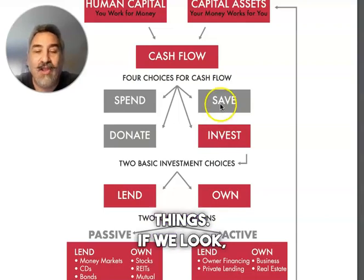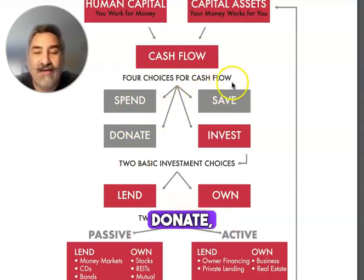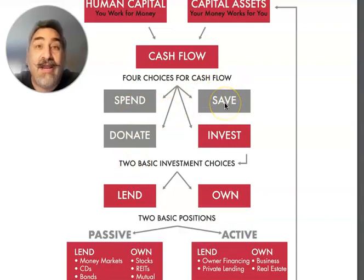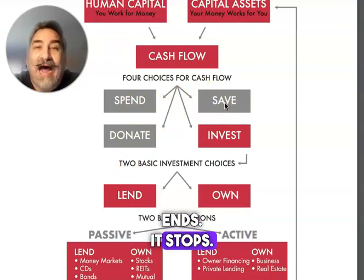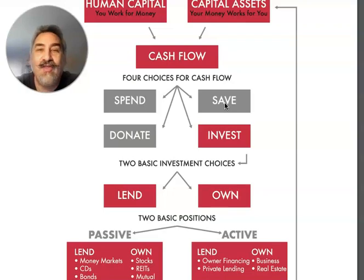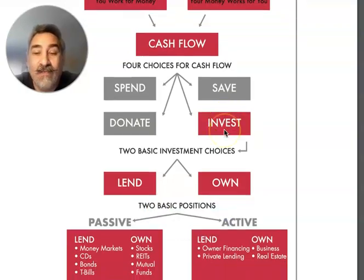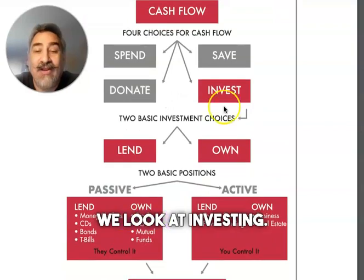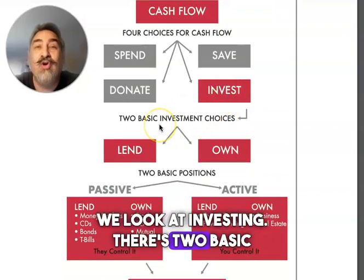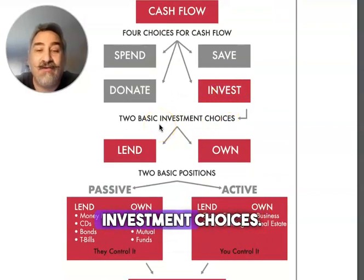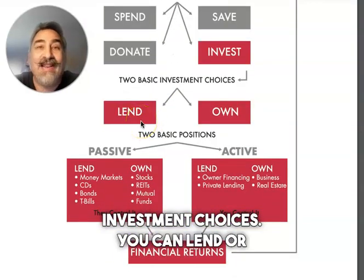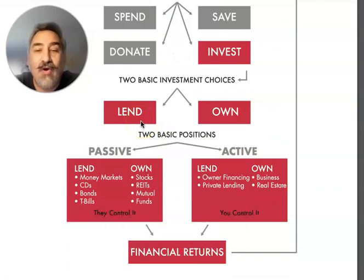If we look at spend, donate, save — the money ends, it stops, the path is over right there. If we look at investing, there are two basic investment choices: you can lend or you can own.